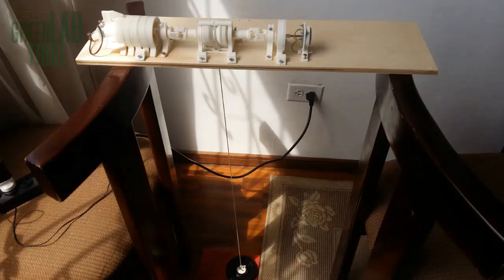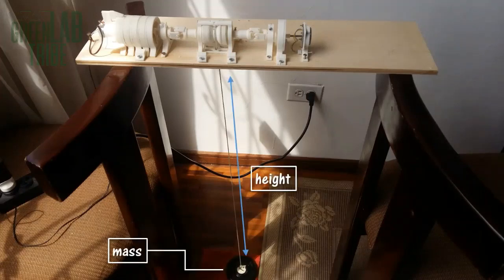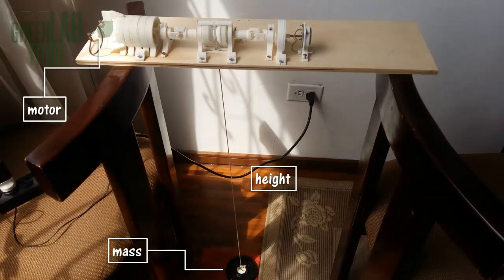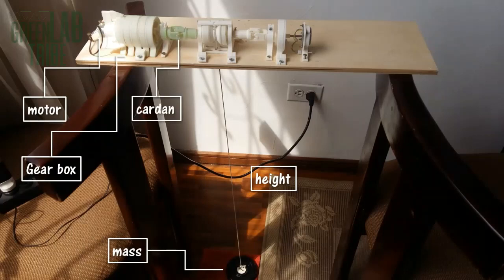This is the prototype. Here is the mass to be lifted, the total height, the electric motor and its gearbox, a curtain joint that I had to install due to misalignment issues with the transmission, the pulley, the generator's curtain joint, and the generator with its transmission.